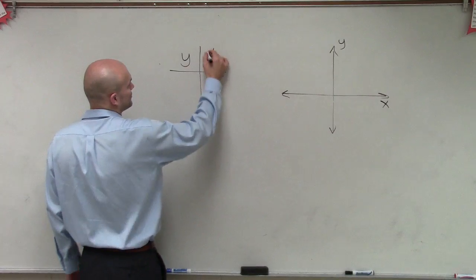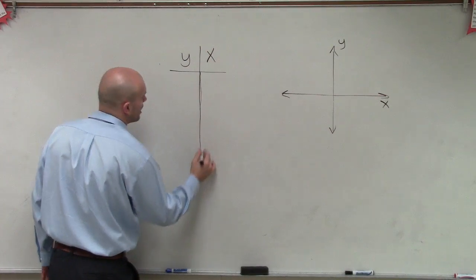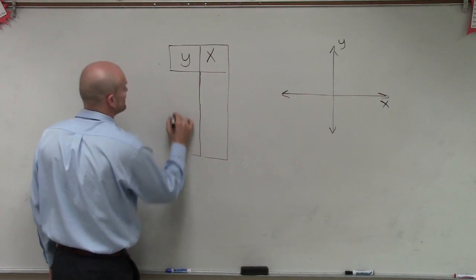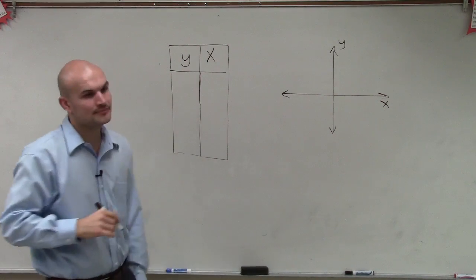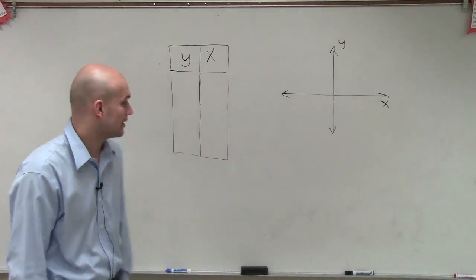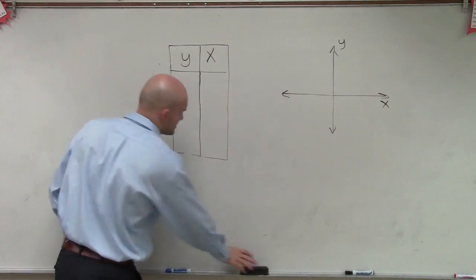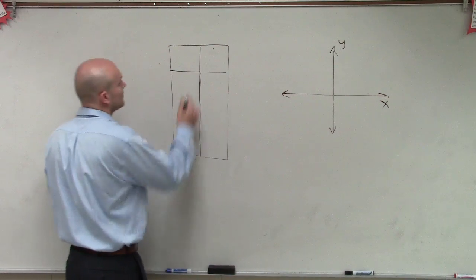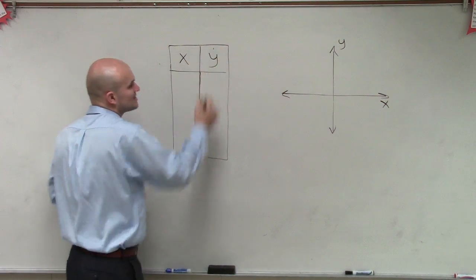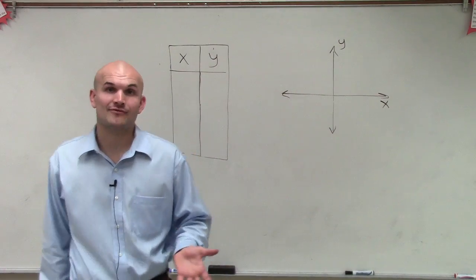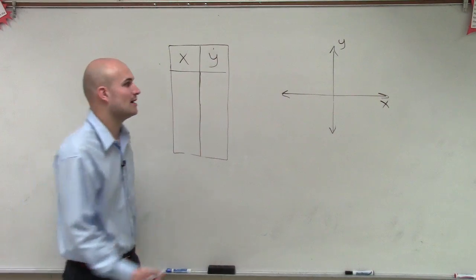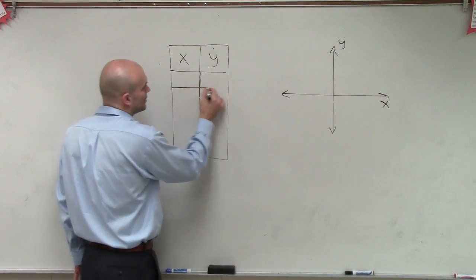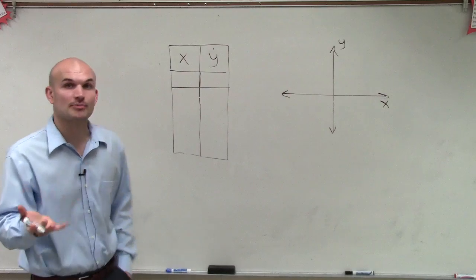So if I'm giving you an equation, especially a function, what we know is for every x-coordinate, we're going to have exactly one y-coordinate. So what we can do, and actually let's rewrite this x and y, what I know is I can always produce a graph by applying a table. And what I mean by this, for every x-coordinate, I'm always going to have a y-coordinate. So let's just go through and graph a couple equations.